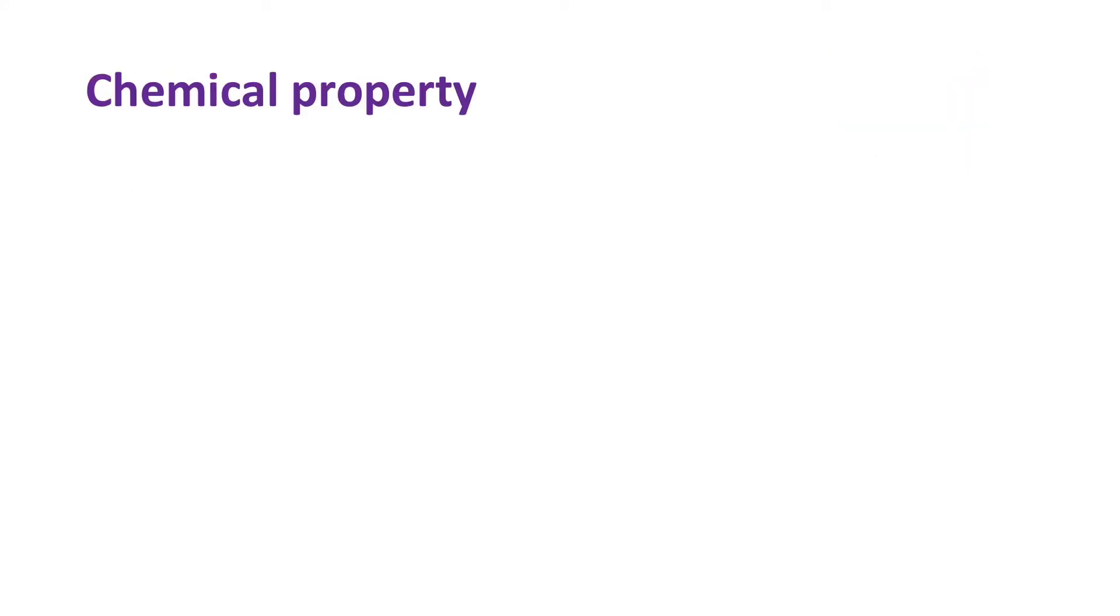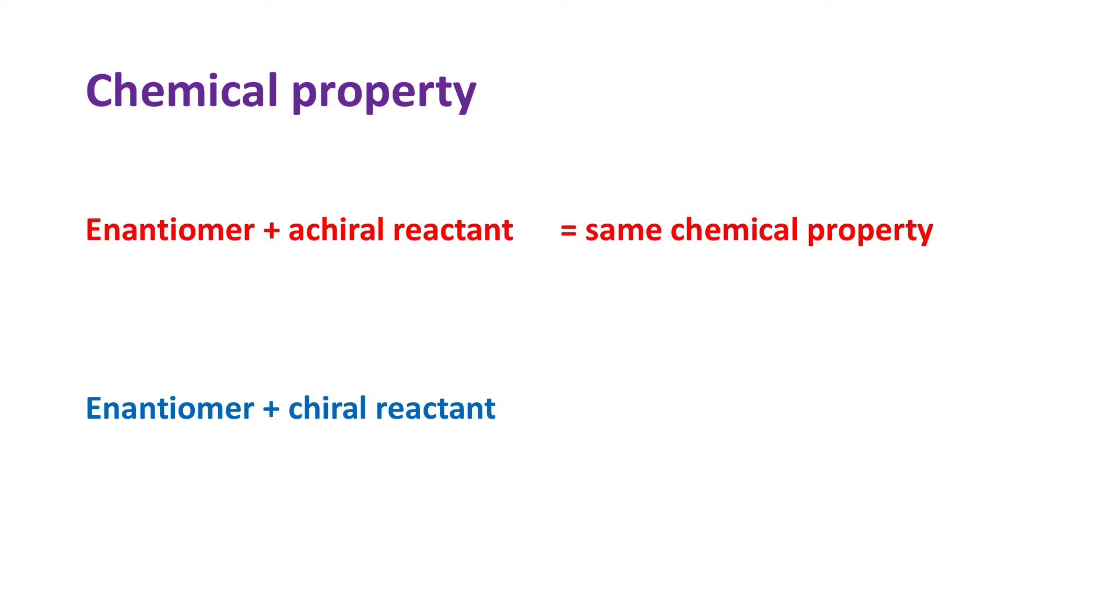The next one is chemical properties. Both enantiomers show same chemical properties only when they react with an achiral reactant. However, when they react with another chiral reactant, different chemical properties will be shown.